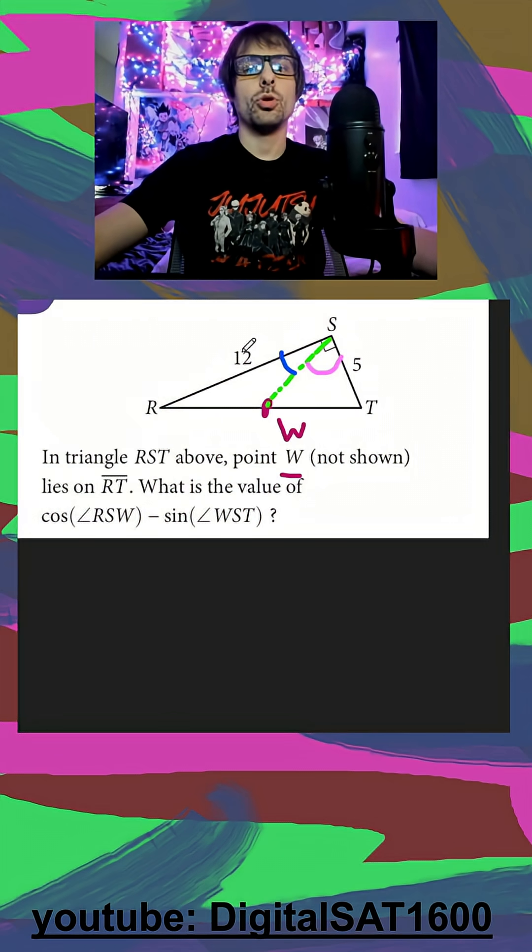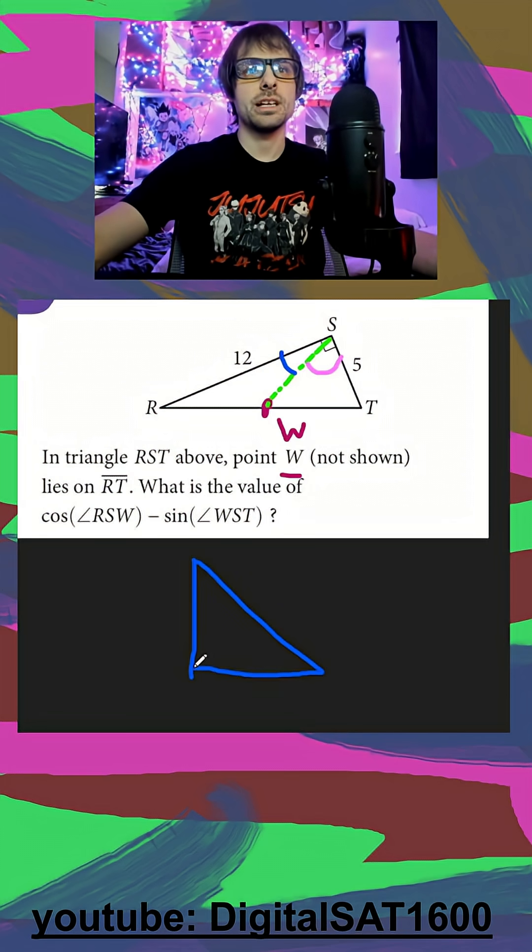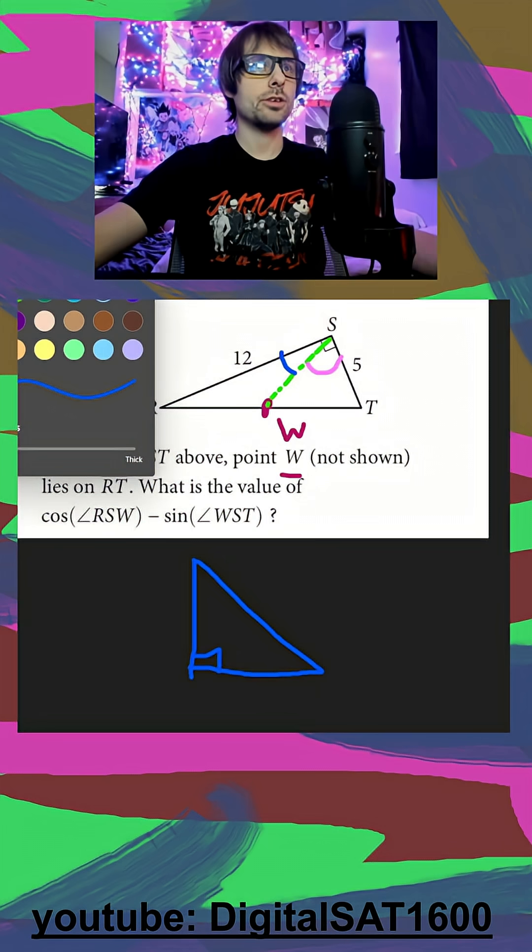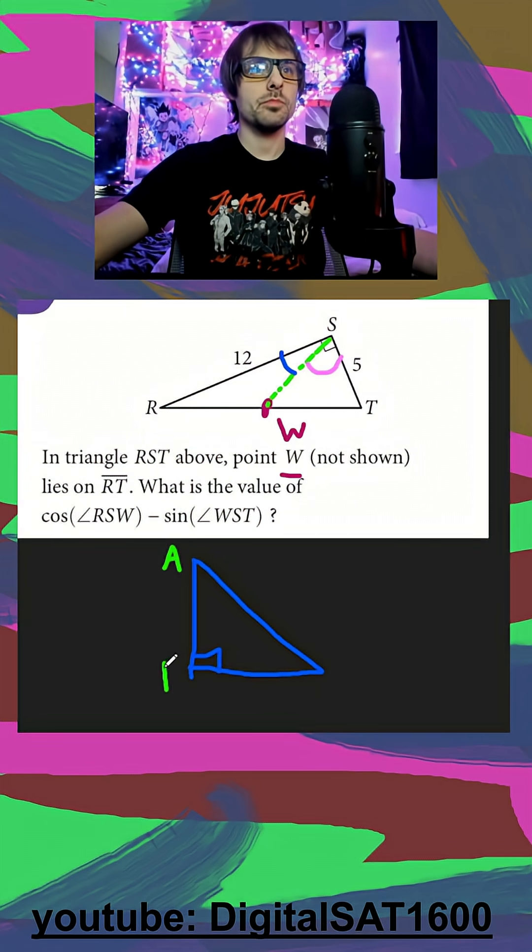So this is going to come down to a little roll that we can remind ourselves with a simple right triangle. So I'm going to draw this down below. Right triangle, we can label this A, B, and C. And our sides, we want to label 3, 4, and 5.